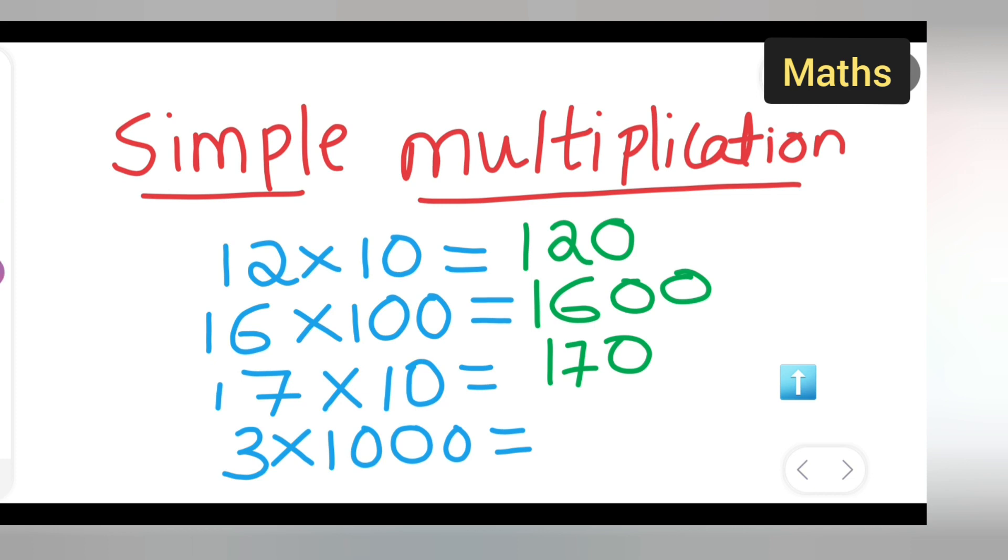Next, what is this thing? 3 times 1000. 3 ones are 3, so you will get 3, 0, 0, 0.